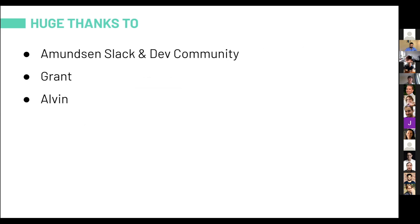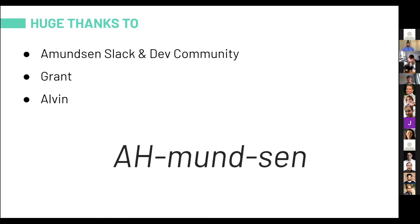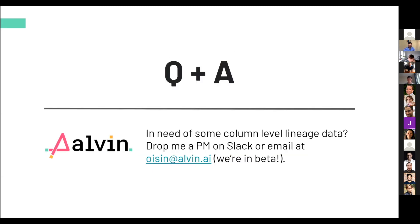I need to thank a few people. The Slack and dev community for Amundsen was really important for getting up to speed on how to develop for Amundsen. Grant Stewart spent hours helping me with metadata and versioning issues — and he has a really cool dog in his picture. The whole Alvin team has been super supportive. And my Norwegian coworker Martin kept pestering me about how to say Amundsen correctly for about a week, because I kept saying 'Amundsen.' I now know it's 'Amundsen.' And that is column-level data lineage.